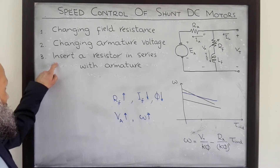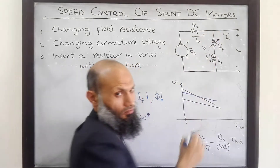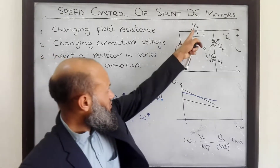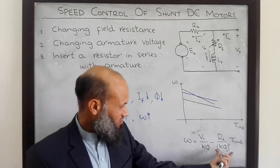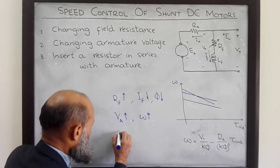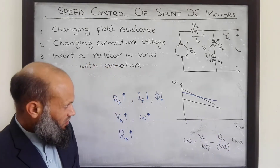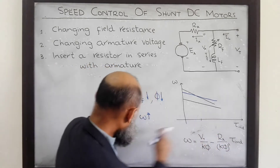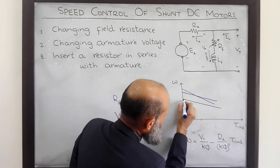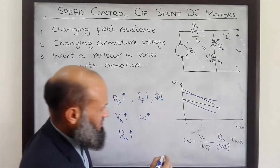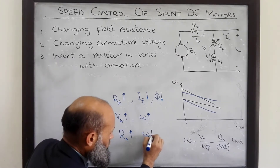The third approach to control the speed is to insert an additional resistor in the armature circuit, that is we change resistance RA. From the equation, increasing RA makes the slope more and more negative, so the torque-speed characteristics change accordingly. That is, for a given load, if we increase RA the speed of the motor will decrease.